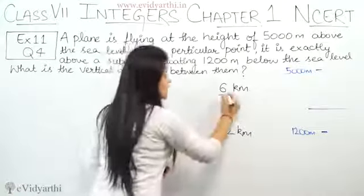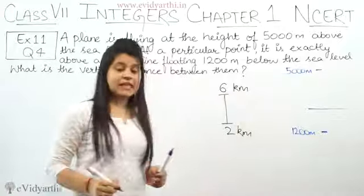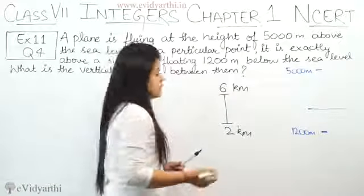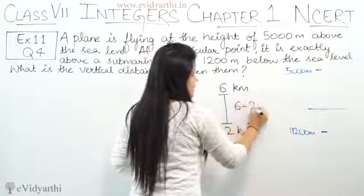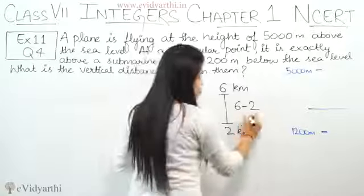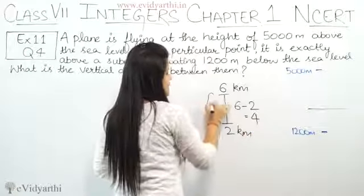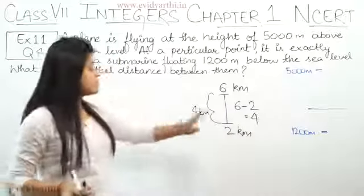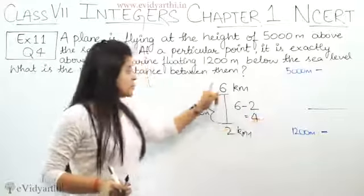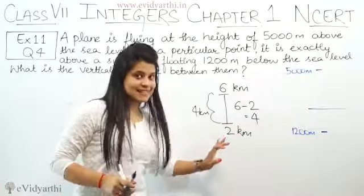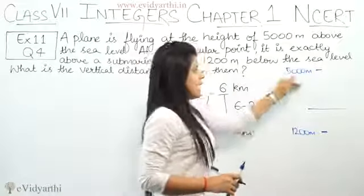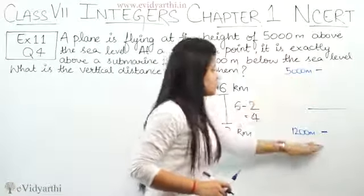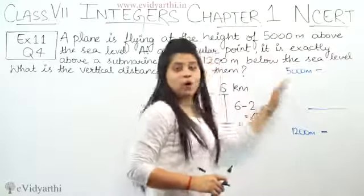If I ask the difference between these two, how do you find it? You will get 4, which means the distance is 4 km. How do we get the distance? Minus. We subtract 6 minus 2. Similarly, the distance between the plane and the submarine we will subtract.